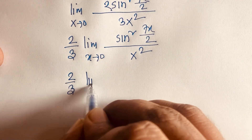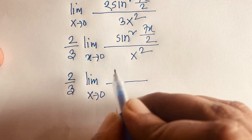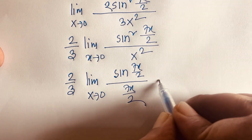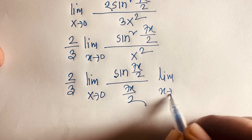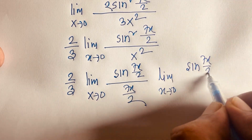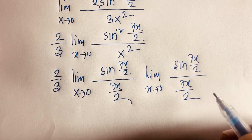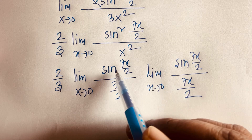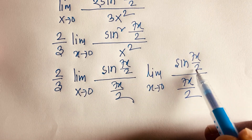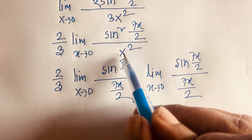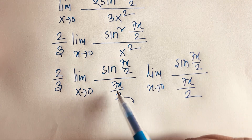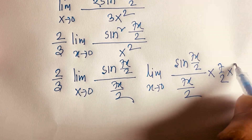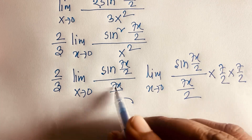Now I rewrite this as 2 over 3 times limit x tends to 0 of [sin(7x/2) / (7x/2)] times limit x tends to 0 of [sin(7x/2) / (7x/2)]. Since sin squared (7x/2) equals sin(7x/2) times sin(7x/2), and x squared equals x times x, the extra factors of 7/2 appear — so we multiply by 7/2 twice, and those cancel out with the x's in the denominator.